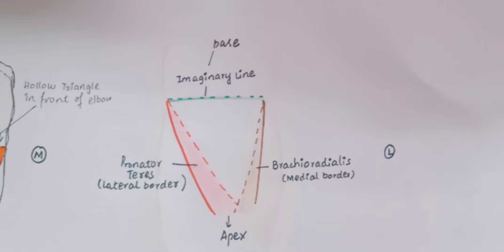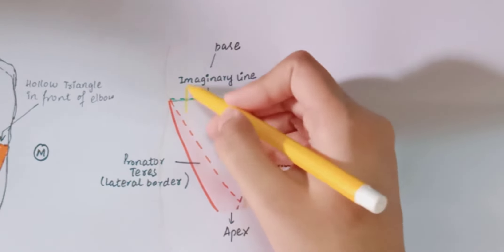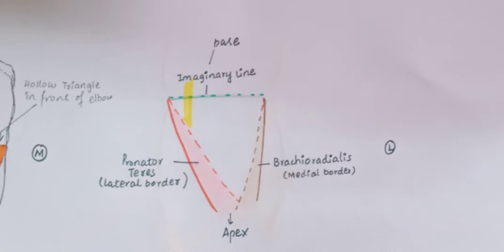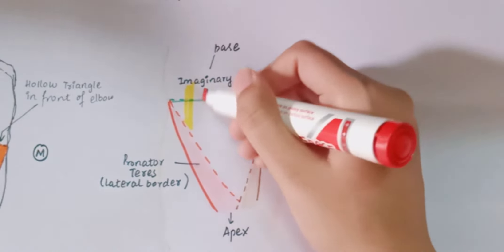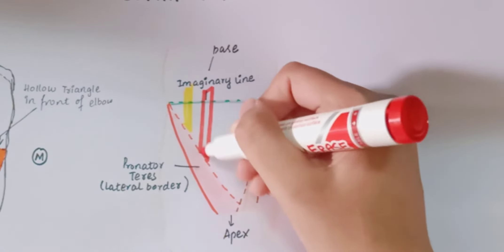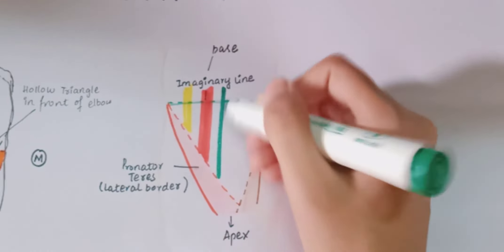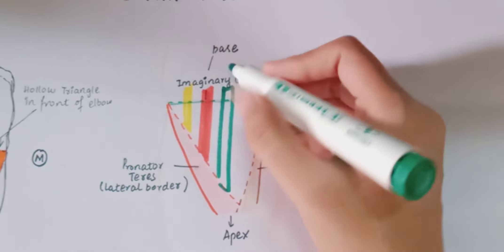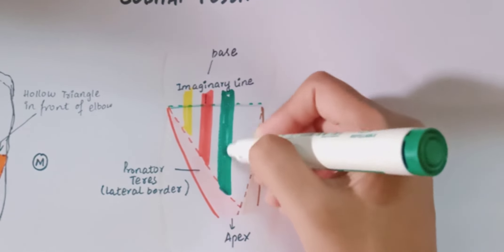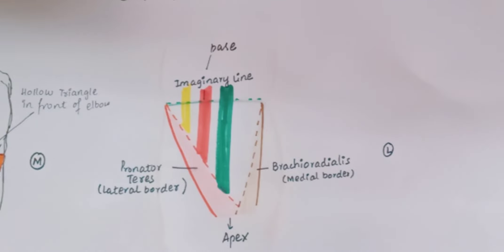Now we will see the contents of the cubital fossa from medial to lateral side. The medial-most structure is the median nerve, then comes the brachial artery, next is the tendon of biceps brachii, and the lateral-most structure is the radial nerve.